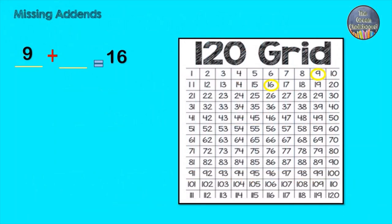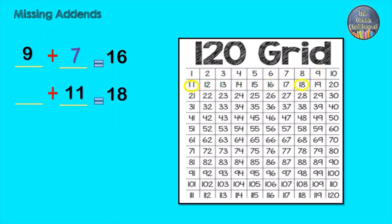9 to 16 is how many hops? 11 to 18 is how many hops? It is 7 hops.